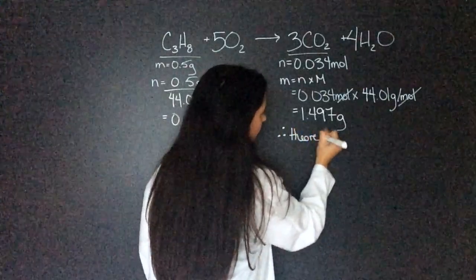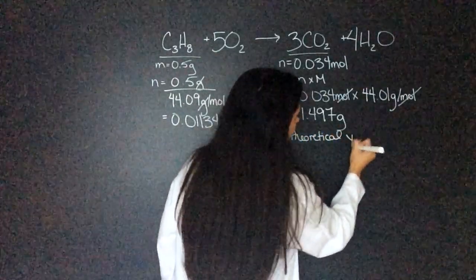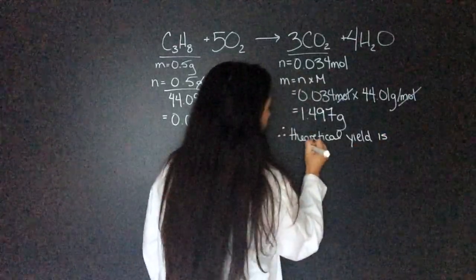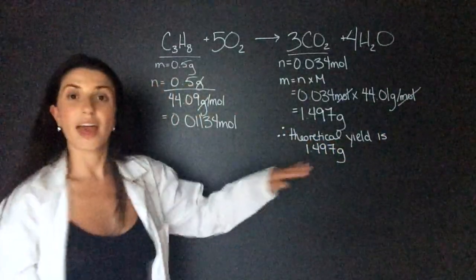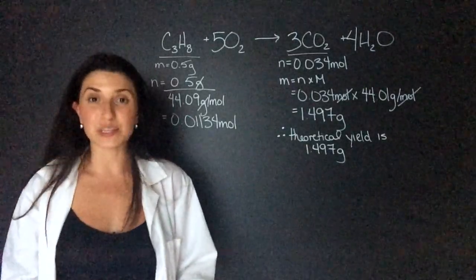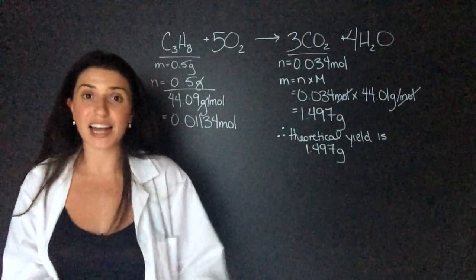Therefore, theoretical yield is 1.497 grams, and there's part one. Now to find the percent yield we have to divide the actual yield by the theoretical yield and multiply that by 100.